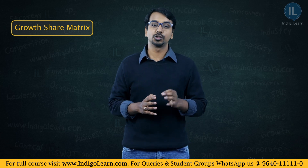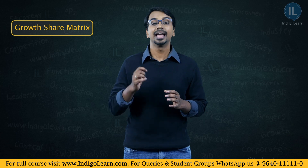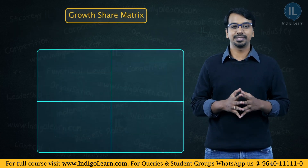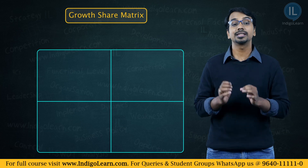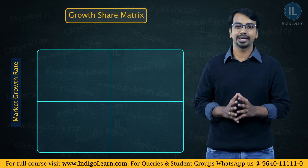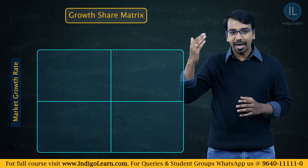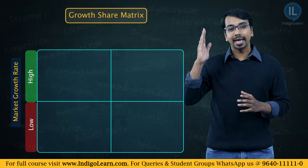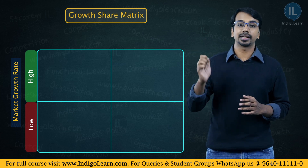The BCG matrix uses relative market share of a firm in an industry and the market growth. We can prepare this BCG matrix using two parameters. The first one is market growth rate — what is the growth rate of the particular market as a whole, or what is the growth rate of the industry? It can be a high growth rate or it can be a low growth rate. On the vertical axis, you plot the market growth rate.